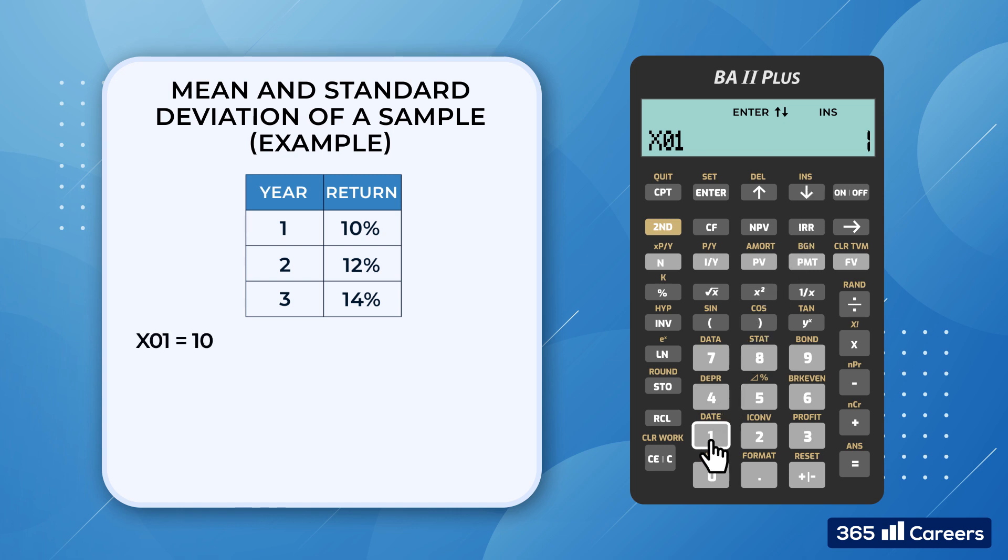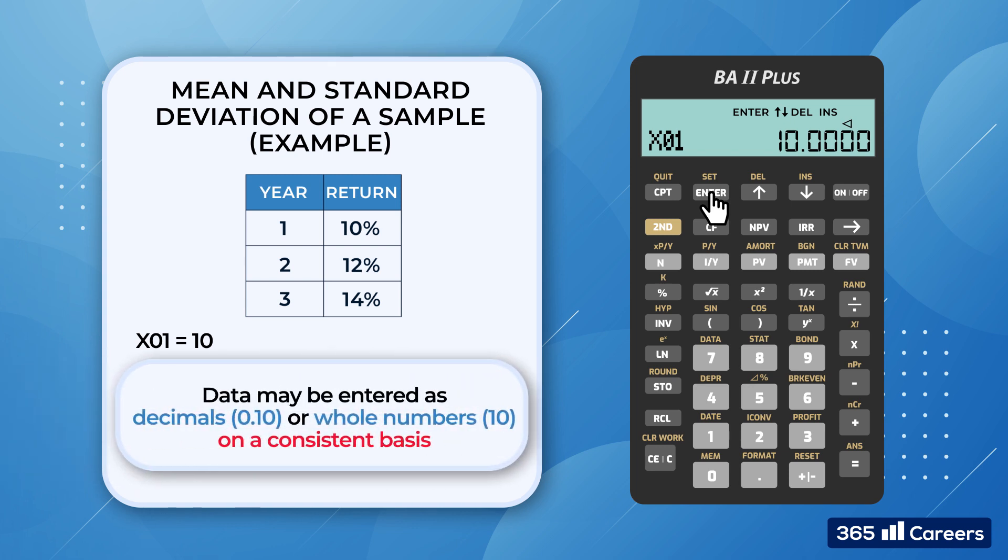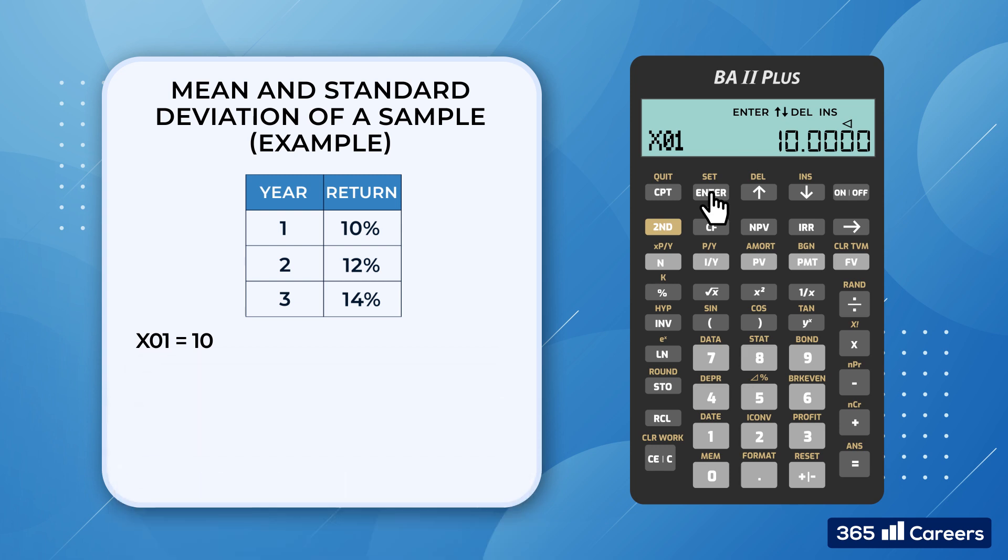Alright, X01 equals 10. One thing we should remember is that we could enter values as decimals or whole numbers. The only limitation is that we have to be consistent. We can't enter 10 for X01 and then 0.12 for X02 because the calculator will show an error later on. We scroll down to Y01, the first value of Y. Its default is 1, and we leave it that way because we use historical data, which does not specify the number of occurrences. Then we enter 12 and 14 for X02 and X03 respectively.